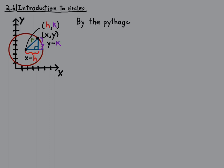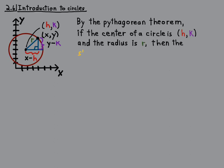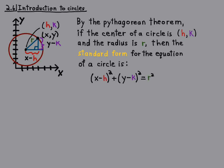So by the Pythagorean theorem, if the center of a circle is (h, k) and the radius is r, then the standard form for the equation of the circle is (x - h)² + (y - k)² = r². So it's just a² + b² = c². c is the radius, a is the x minus h, and b is the y minus k. Just the Pythagorean theorem.